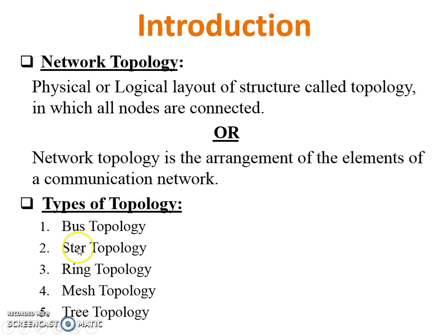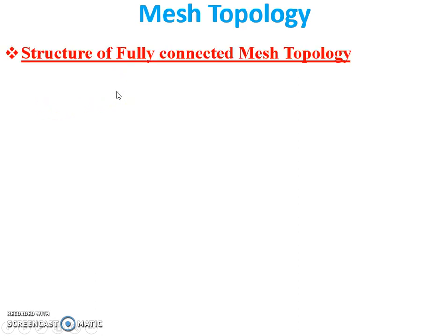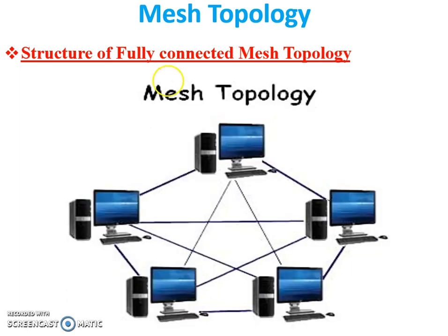The types of topology are: bus topology, star topology, ring topology, mesh topology, and tree topology. Today I'm going to teach you mesh topology. Bus topology, star topology, and ring topology videos are already uploaded on my YouTube channel. Mesh topology is divided into two main categories: first is fully connected mesh topology, and second is partially connected mesh topology.